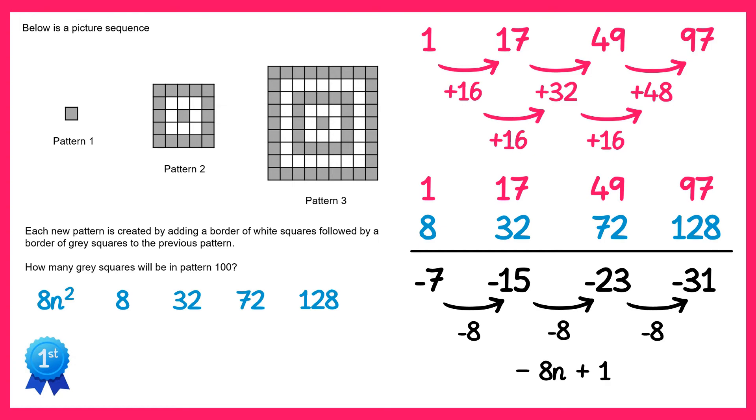If you now combine the quadratic part, which was 8n squared, with this linear part, negative 8n plus 1, you find the nth term of the sequence.